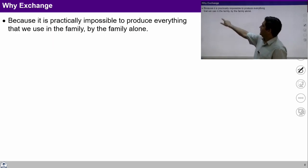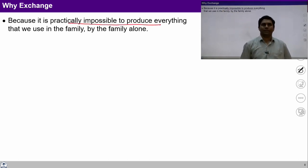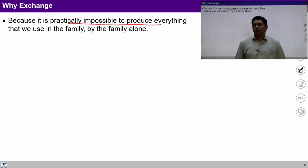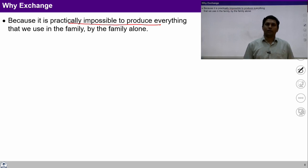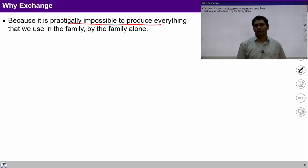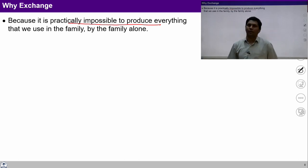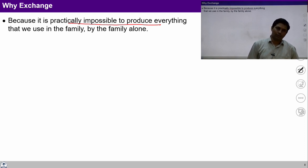Exchange is needed because it is practically impossible to produce everything. It is not possible for one person to produce every need required in the family or by an individual, that is why the exchange process becomes very important to fulfill all needs. Fulfilling all needs requires many professions and many kinds of work, which is actually a combined effort by a group of families — someone producing rice, someone producing wheat, someone making clothes. If exchange happens with the feeling of mutual fulfillment, then needs of everyone can be fulfilled.